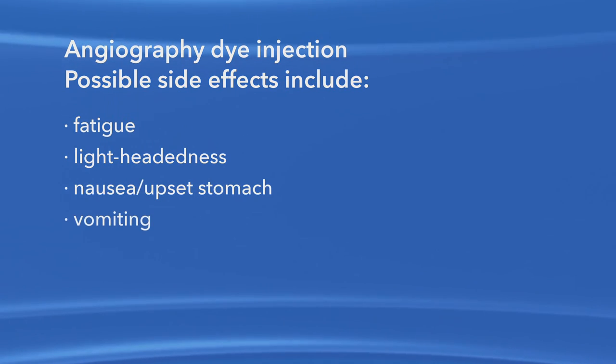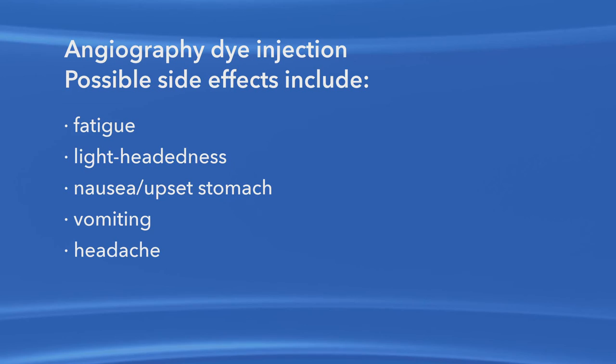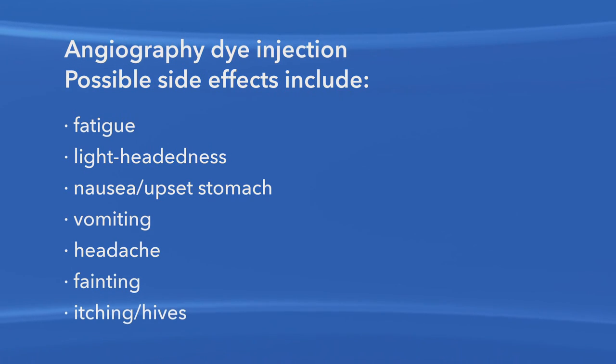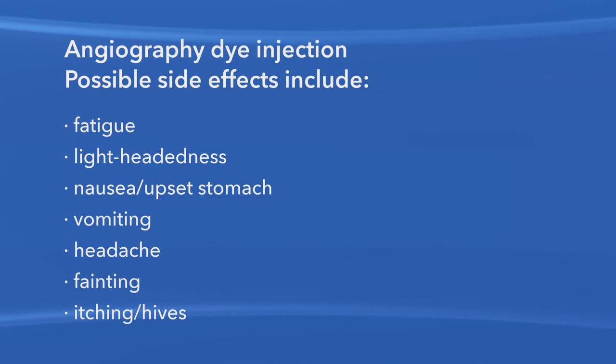Also possible are vomiting, headache, fainting, itching, or hives. Alert your ophthalmologist if you experience any of these side effects. Rarely, people may have an allergic reaction to fluorescein dye such as a skin rash or itchy skin. Severe reactions are very uncommon but could include trouble breathing. This rare occurrence would be treated with antihistamine drugs as needed.